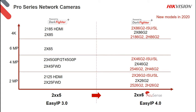Looking at cameras from EasyIP 3 to EasyIP 4 — EasyIP 3 is not being replaced by EasyIP 4. EasyIP 3 remains your entry-level normal day-to-day camera. EasyIP 4 includes AccuSense functionality at the entry level. All the new models are shown in red — those are the new models released this year. Both ranges are Powered by Darkfighter, as previously explained.